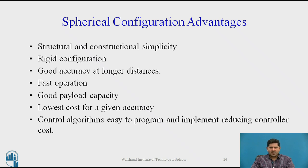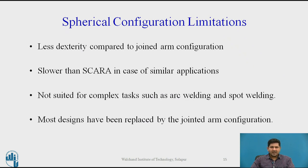Similarly, the spherical configuration is also quite obsolete, but it had some advantages: structural and construction simplicity, good accuracy over long distances, good payload capacity, lowest cost for a given accuracy, and control algorithms that are easy to program. It shares very similar features to the cylindrical configuration. Limitations are also the same: less dexterous compared to jointed arm, slower than SCARA for a similar task, and not suited for arc welding and spot welding.